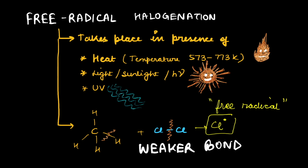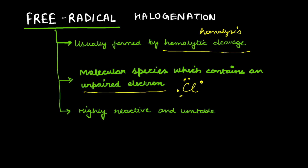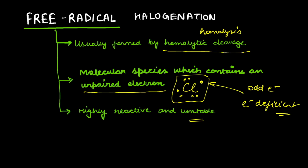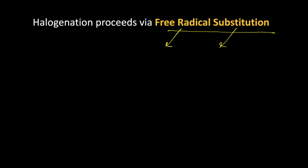Let's understand what these free radicals are. They are formed from homolytic cleavage — homolysis. They are molecular species which contain an unpaired electron. If you count chlorine's total electrons, it will have 7 — odd electrons. Such species are electron deficient, highly unstable, and highly reactive. You are going to see they create havoc in our reaction. Halogenation proceeds via free radical substitution.